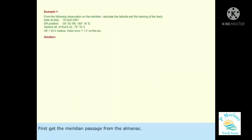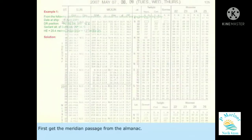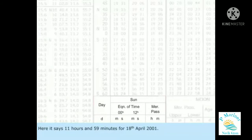Example 1. First, get the meridian passage from the almanac's page. Here it says 11 hours and 59 minutes for 18th April 2001.